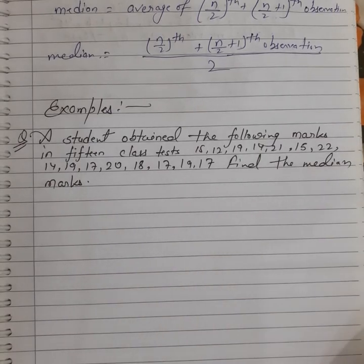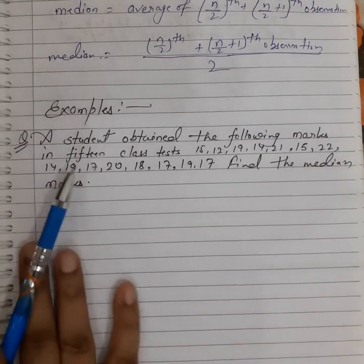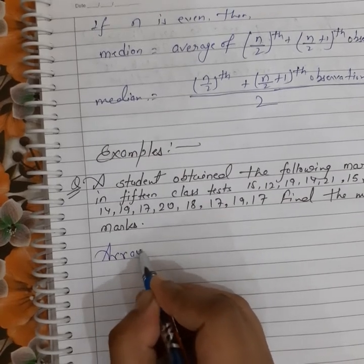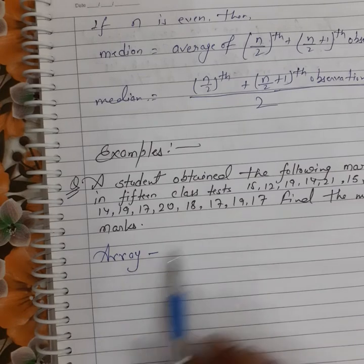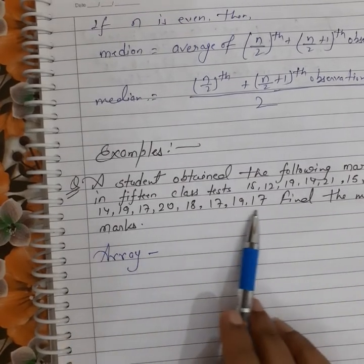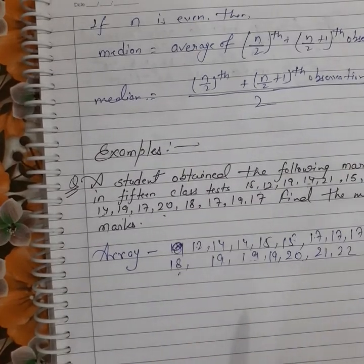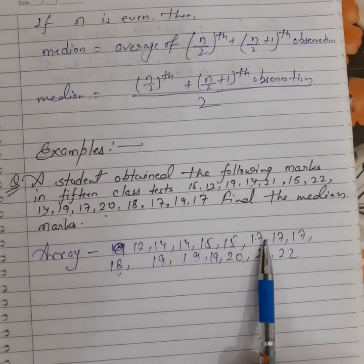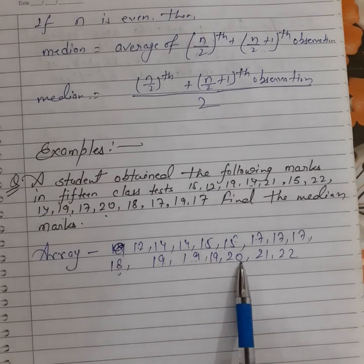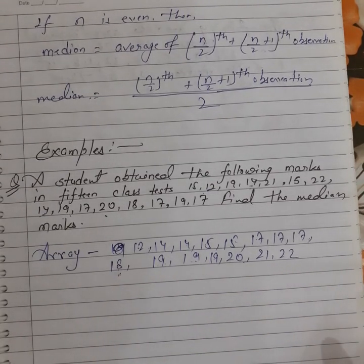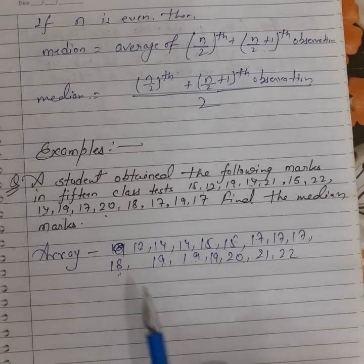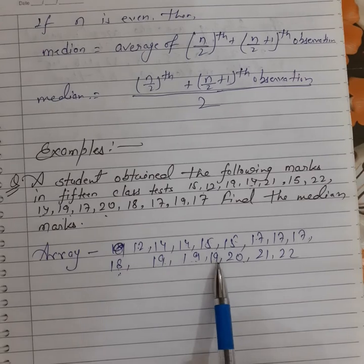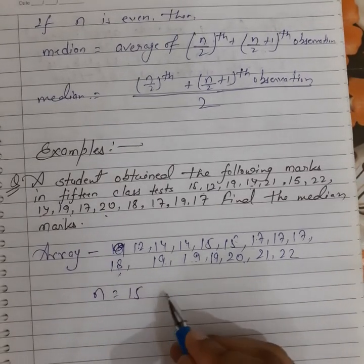Find the median of the marks. First we have to arrange the data in ascending order to make the array. After arranging, the array is: 12, 14, 14, 15, 15, 15, 17, 17, 17, 17, 18, 19, 19, 19, 19, 20, 21, 22. Now in the second step we count the total number of observations: 1, 2, 3, 4, 5, 6, 7, 8, 9, 10, 11, 12, 13, 14, 15. So n = 15, which is odd.